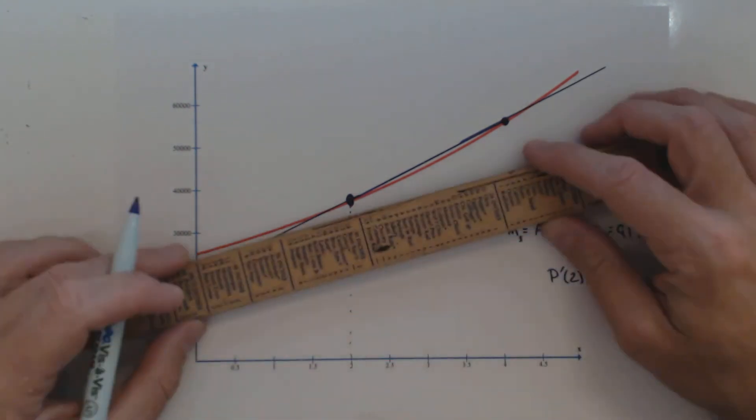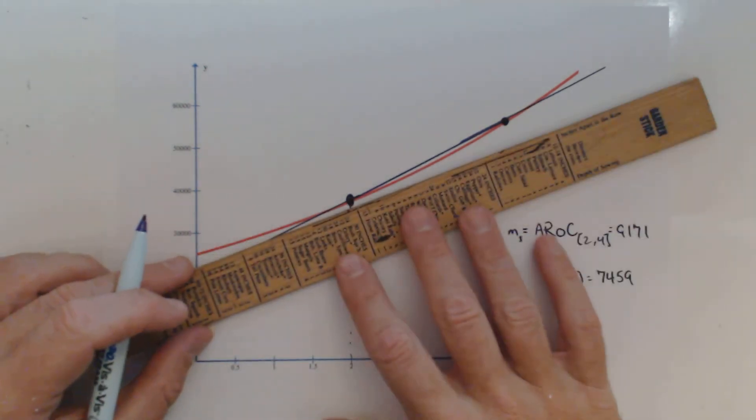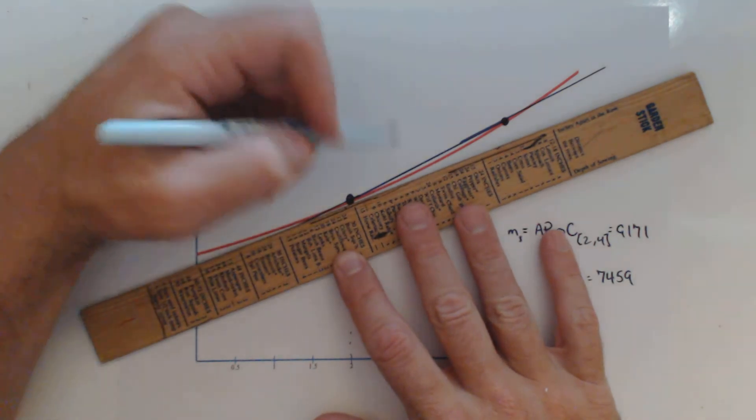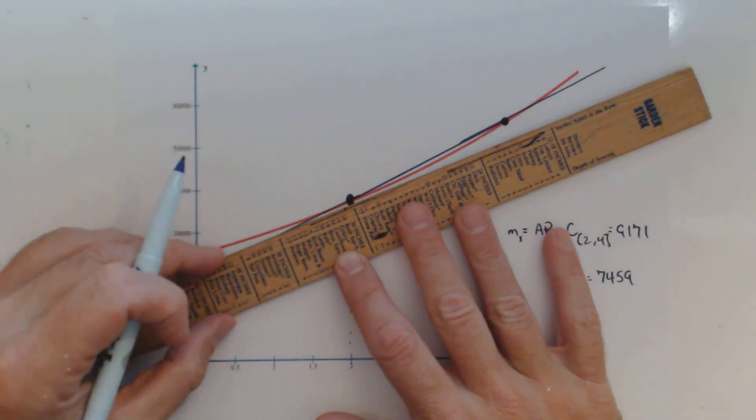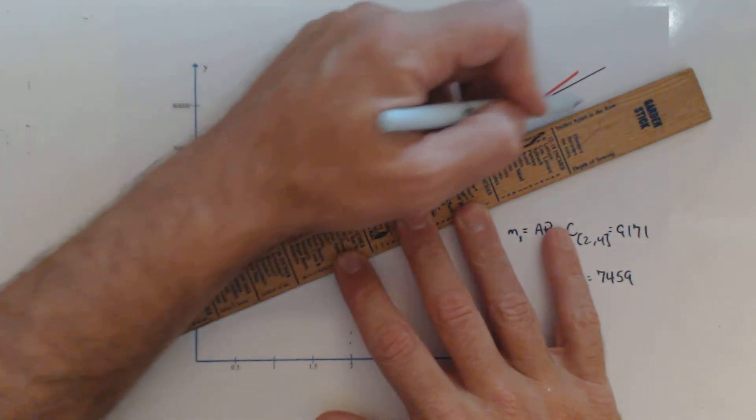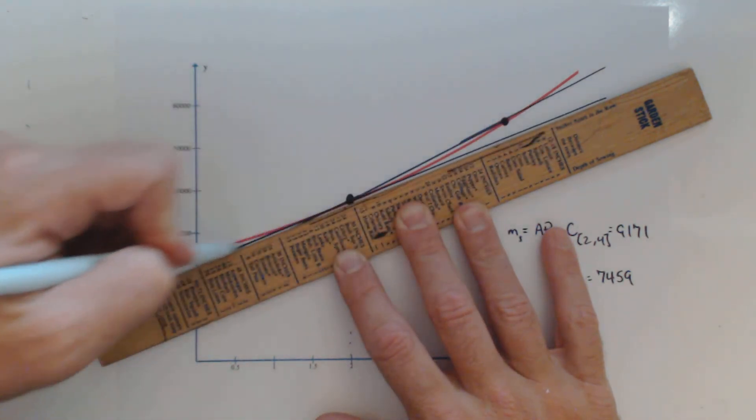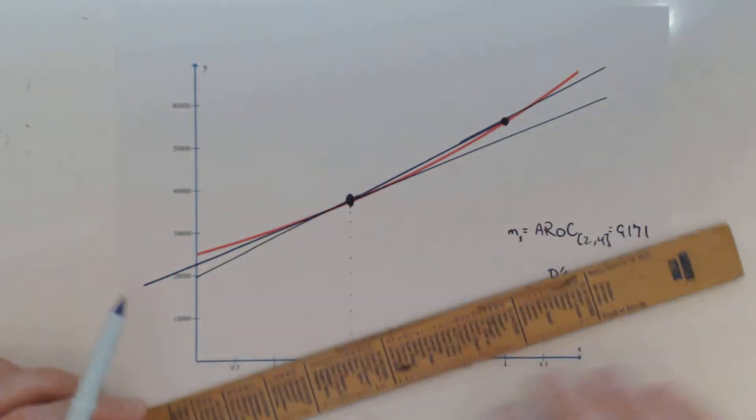Now the line for our tangent is going to hit at that one point and mimic the slope of our line. So let's see how we can do there. So about right there for our ruler. And right there is our tangent line.